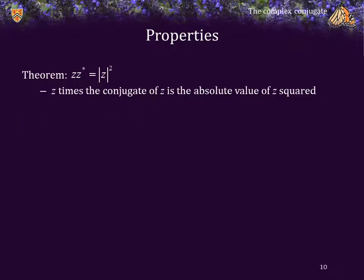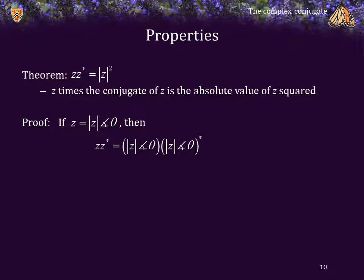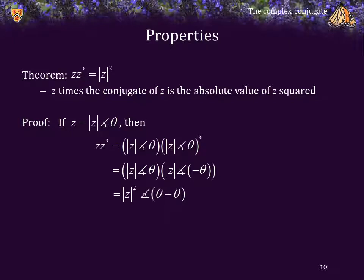Theorem: z times z star is equal to the magnitude of z squared — that is, z times the conjugate of z equals the absolute value of z, all squared. Proof using polar representation: z equals the magnitude of z phase theta, so z times z star is the product of the magnitude of z phase theta and the magnitude of z phase negative theta. The product of two complex numbers in polar form is the product of the magnitudes phase the sum of the angles. The product of the magnitudes is the absolute value of z squared, and the sum of the angles is theta minus theta, which is zero. That gives us the real number — the absolute value of z squared.